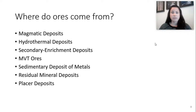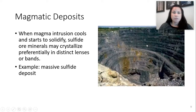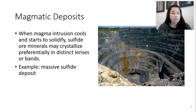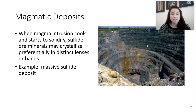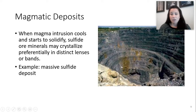Where does ore come from? We're going to talk about each type individually. The first is a magmatic deposit. This is when magma intrudes, the intrusion cools and starts to solidify, and sulfide minerals may crystallize in distinct lenses or bands. An example is a sulfide deposit — you can see in this picture on the right an open pit mine where the sulfide bands and lenses appear in that orangish color.